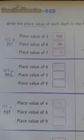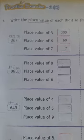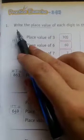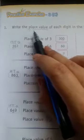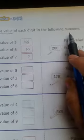Good morning students. We have done exercise 3rd A and 3rd B. Now we will start exercise 3rd C. Question number 1: Write the place value of each digit in the following numbers.